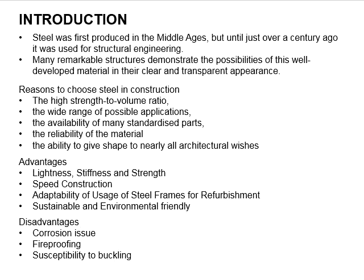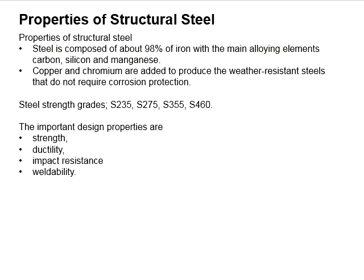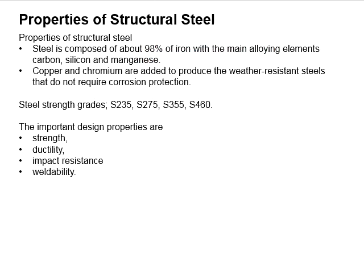However, there are some disadvantages of steel, which are always associated with corrosion issues, fire resistance, and also buckling. Steel is basically composed of about 98% iron, in combination with other alloying elements such as carbon, silicon, and magnesium. Such combinations will alter the mechanical properties of the member.